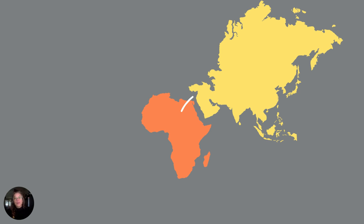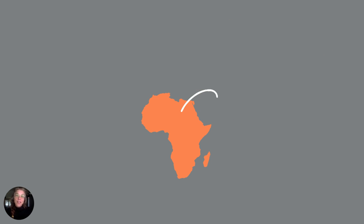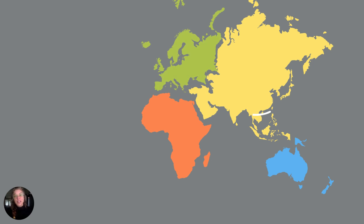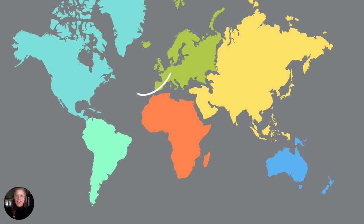Climate change and other pressures led to migration out of Africa. And this migration came in many ways, taking humans from Africa to Asia, from Asia to India and Australia, from the Middle East to Europe, and then to Central Asia and Russia, and finally to the Americas.